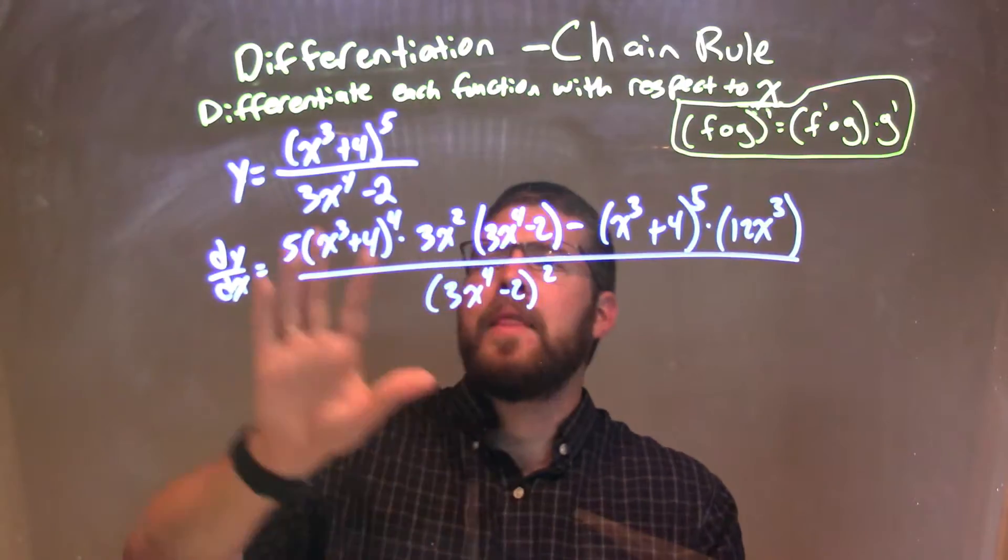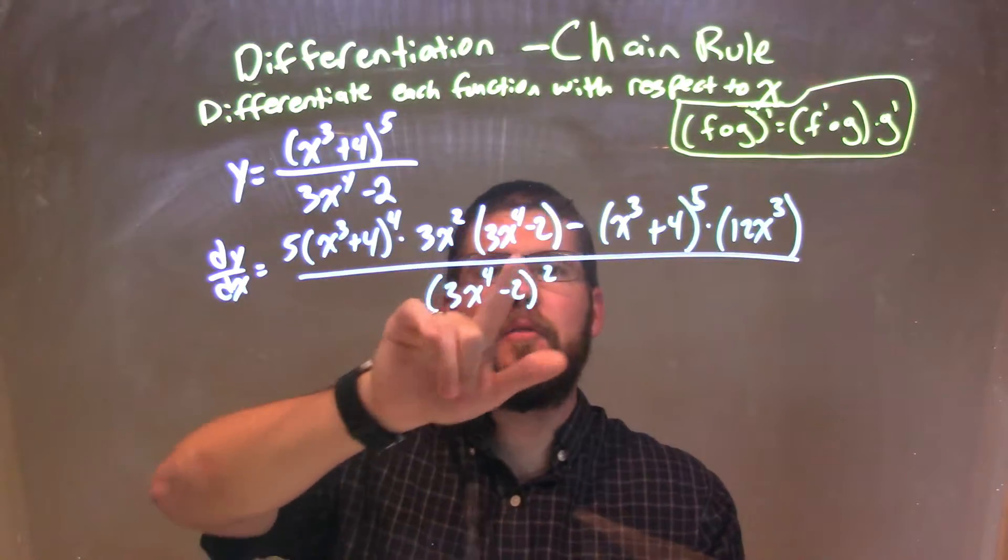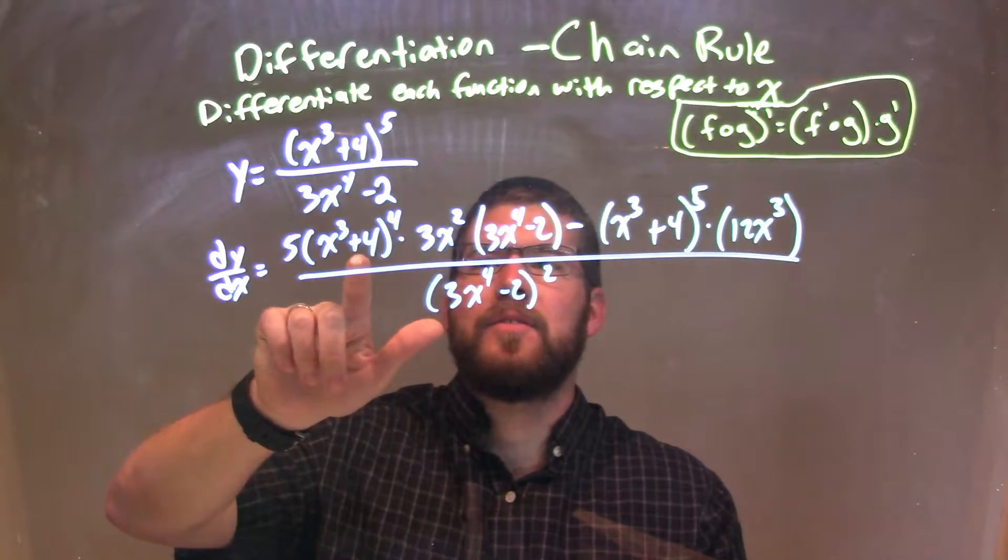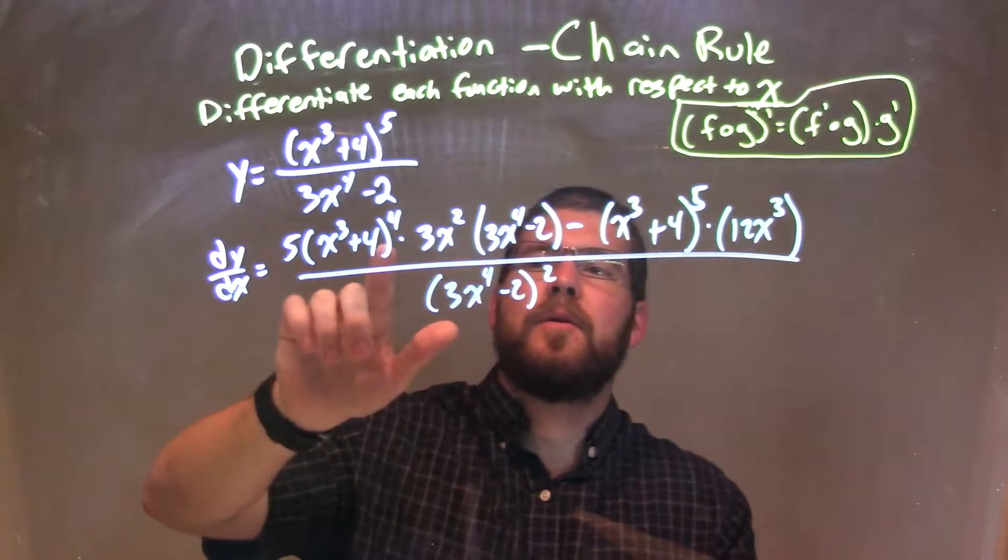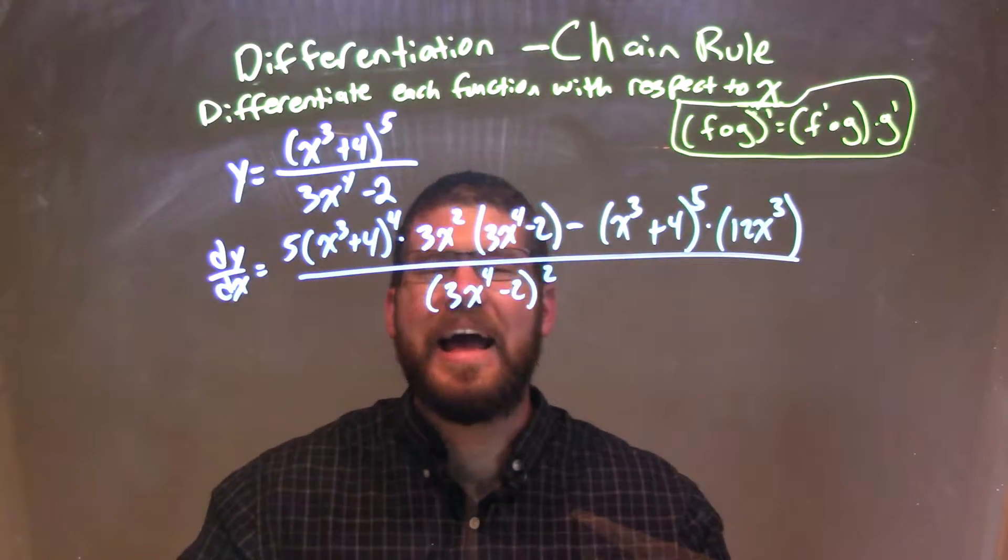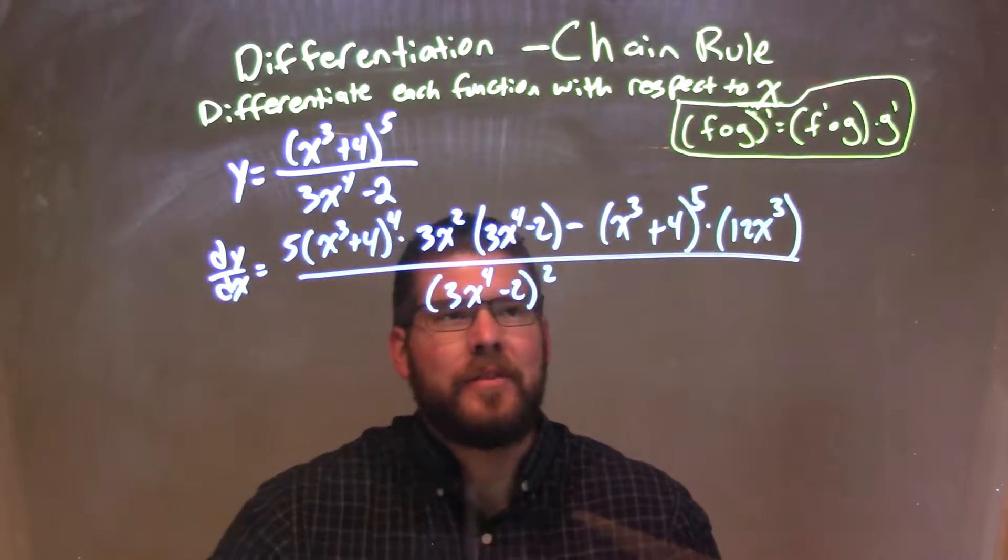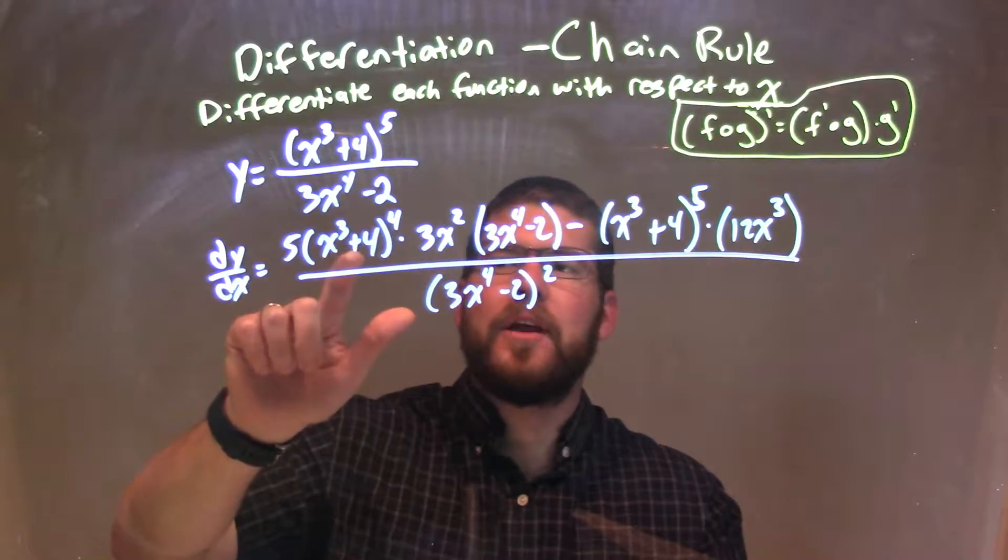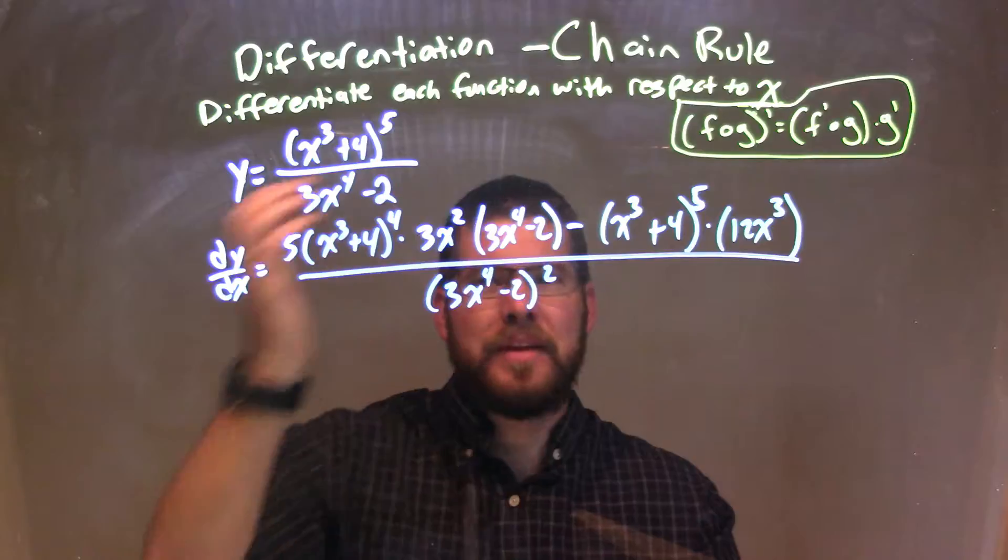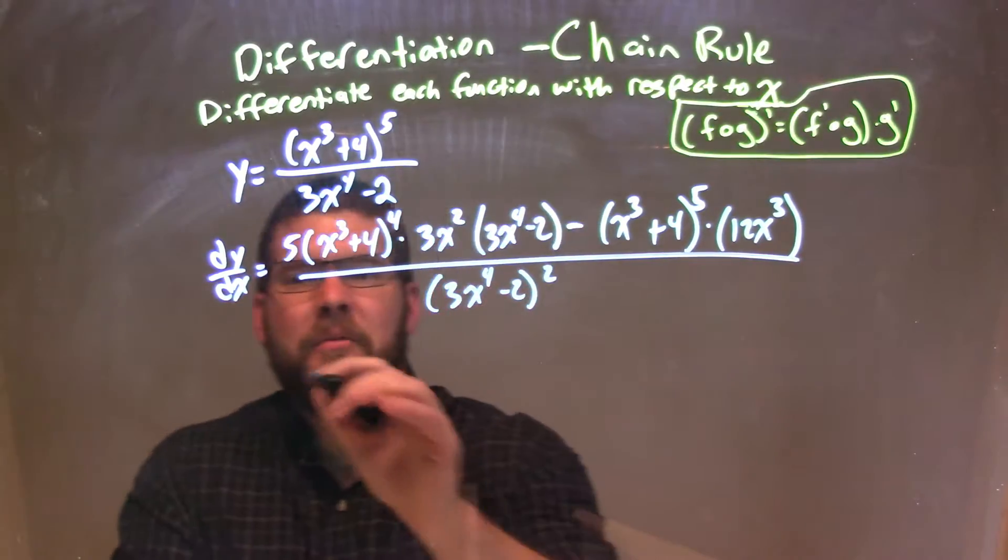So when they simplify this, you could probably do stuff where you pull out a x to the third plus four to the fourth power here, pull that out, multiply, distribute some things, whatever. I don't necessarily like to, I don't think it necessarily looks that nice. I would if they had the same exponent right there, or the same amount, so it was an easy pull out there, but I don't really worry about that.